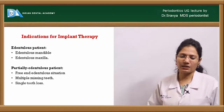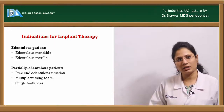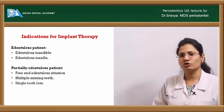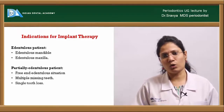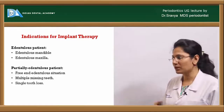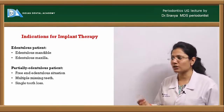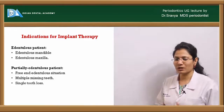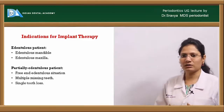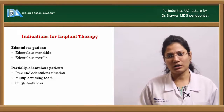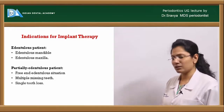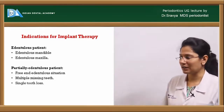Implant therapy is indicated in edentulous or partially edentulous patients. In completely edentulous patients, an implant-supported prosthesis or implant-supported denture can be placed in the edentulous maxilla or mandible. For partially edentulous patients, particularly in free-end edentulous situations such as distal extension areas where only a removable or cast partial denture would otherwise be possible, implants are the best choice. Implants are also indicated for multiple missing teeth and single tooth loss.